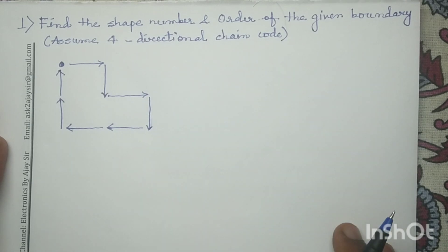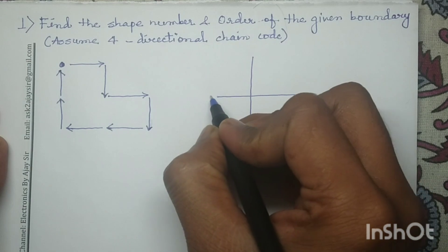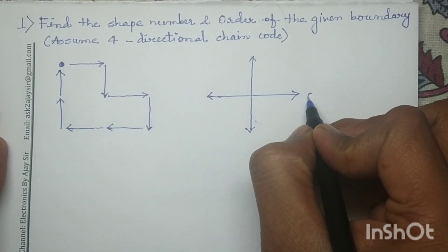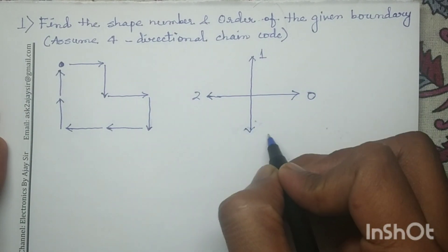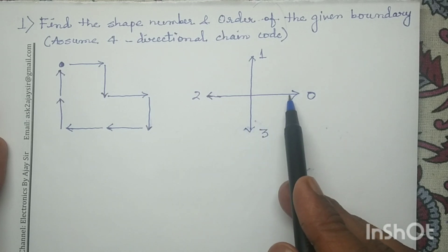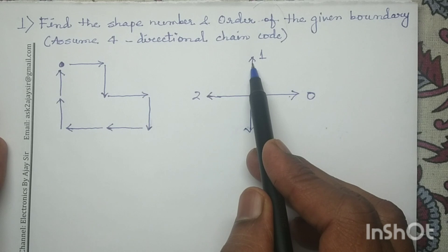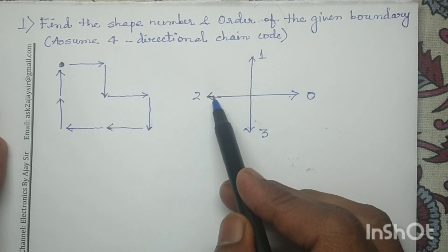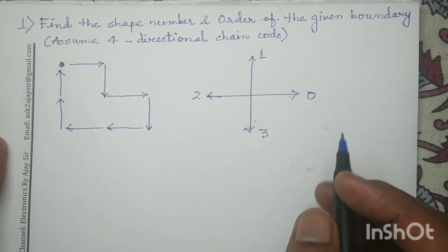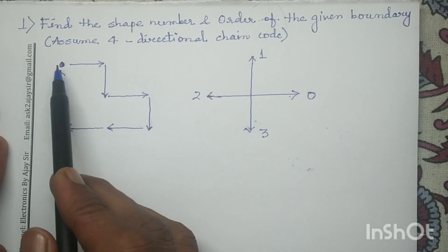We have to use four-directional chain code. In four-directional chain code: the forward direction is assigned directional code 0, the upward direction is assigned code 1, the reverse direction is assigned code 2, and the downward direction is assigned directional code 3.